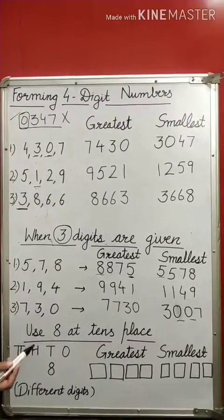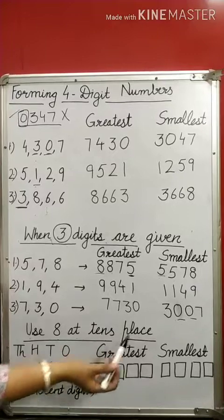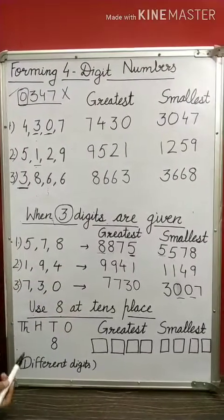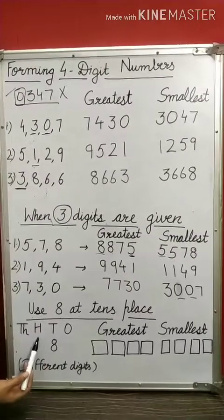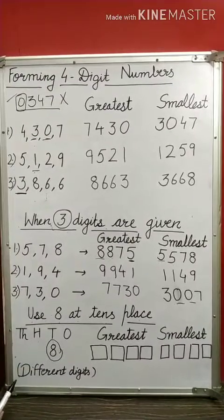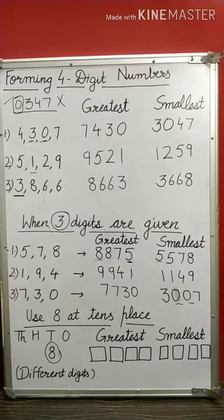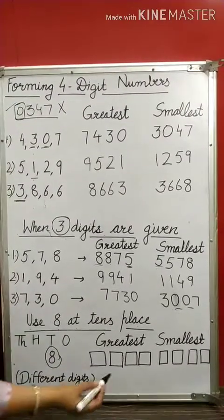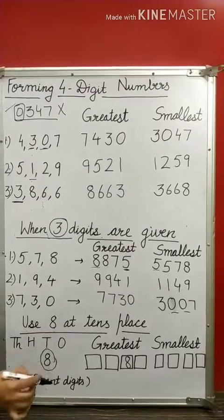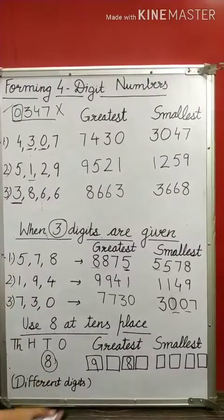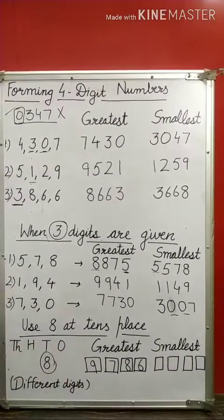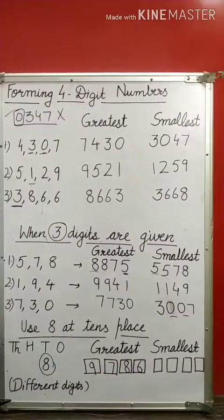Let me tell you one more thing. There may be questions like: use 8 at the tens place. That means when you are given a specific condition that a digit must be used at a particular place only. Here I have written the places: ones, tens, hundreds, thousands. We are asked to use 8 at the tens place, and also to use different digits. To form the greatest number, I need to write 8 at the tens place, then choose the greatest available digits: 9 for thousands, 7 for hundreds, and 6 for ones — since I need to choose digits of greater value.